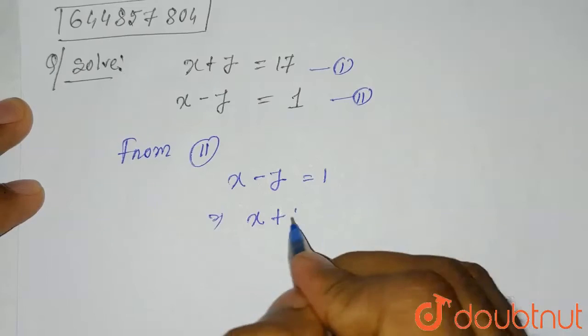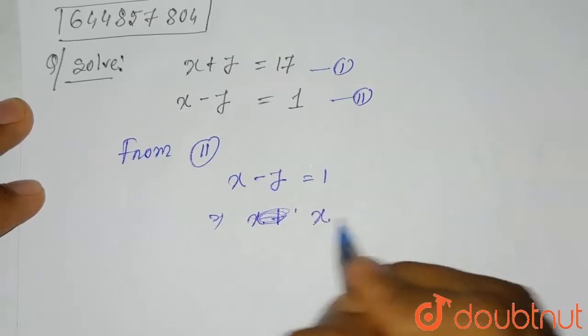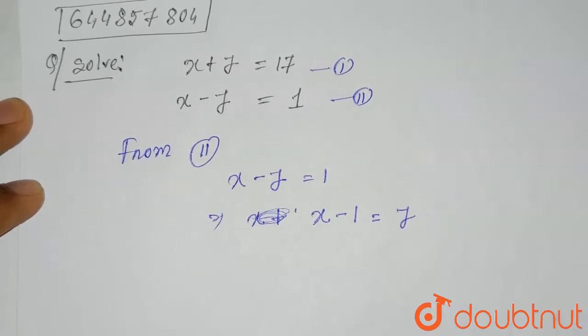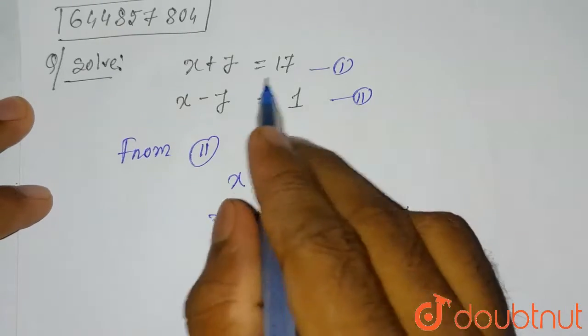So it will be x minus 1 equals y. This is the value of y: y equals x minus 1.